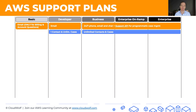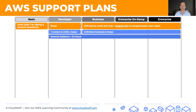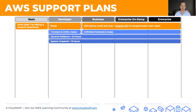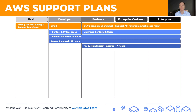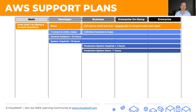For response times: general guidance questions get a reply within 24 hours across all plans except Basic. For a system impaired case, they reply within 12 hours. In Business, Enterprise on Ramp, and Enterprise, a production system impaired gets a response within four hours, and a production system down gets a reply within one hour. For a business-critical system down, Enterprise on Ramp replies within 30 minutes, and Enterprise within 15 minutes.